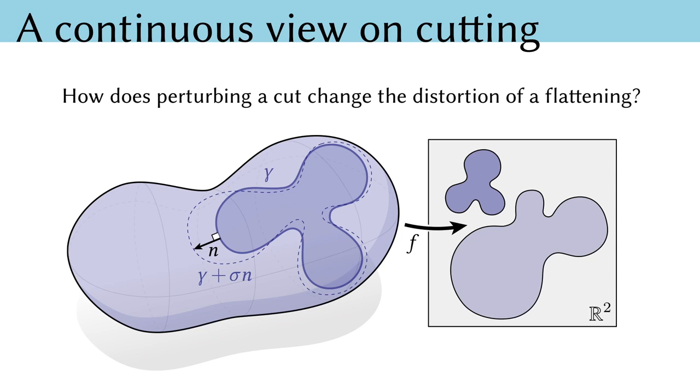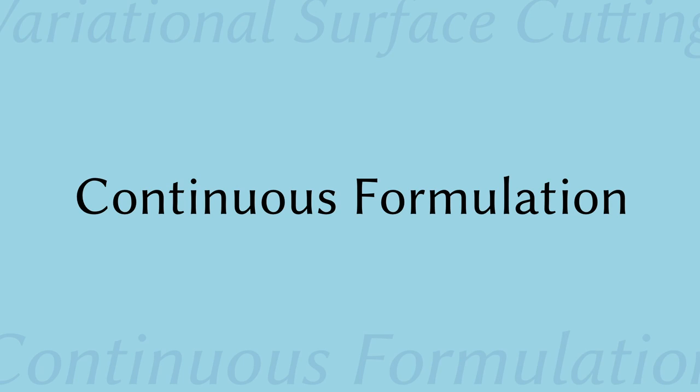Suppose my surface is cut along the curve gamma and flattened into the plane. How does perturbing the location of this cut change the distortion of the flattening? Answering this question first in the smooth setting will lead to a natural and surprisingly simple algorithm for optimizing surface cuts. For the fabrication applications discussed previously, this actually makes a lot of sense because we want cuts that are more a function of the underlying geometry and less one of the particular input mesh we happen to have.